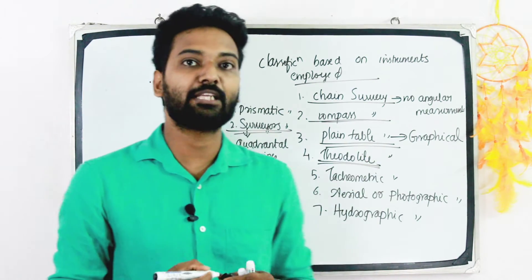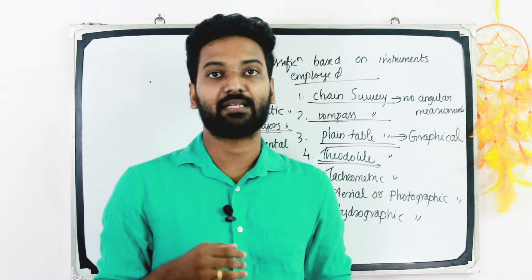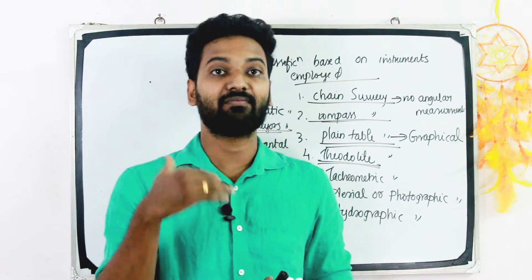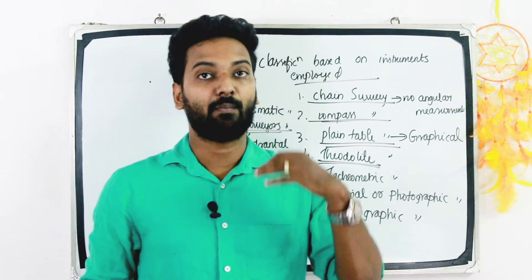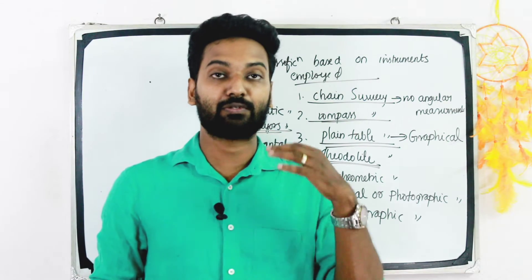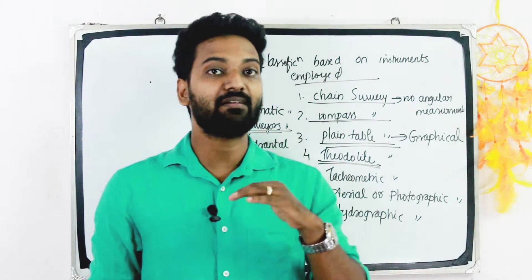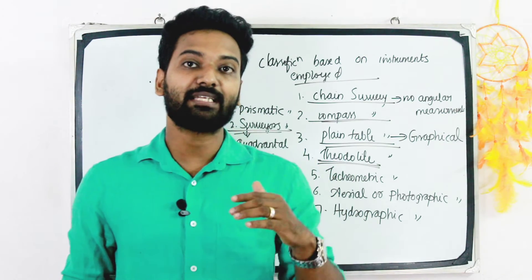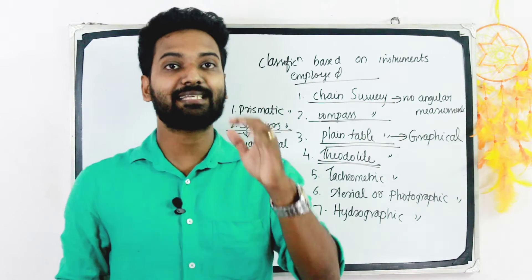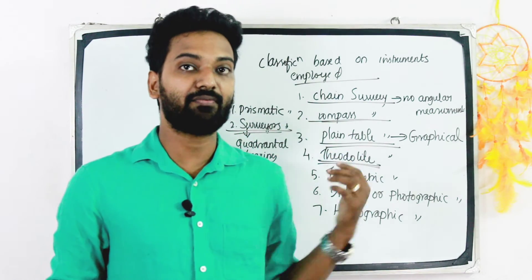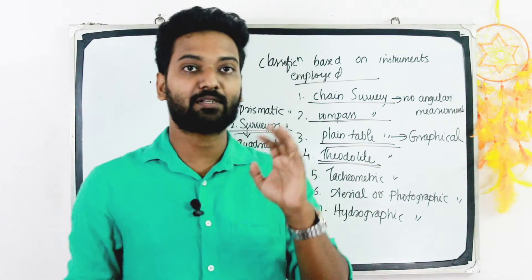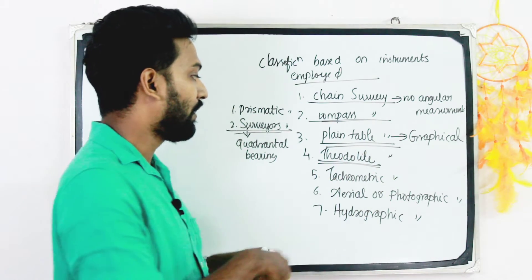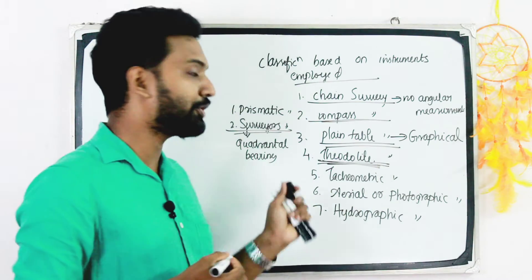The fourth one is theodolite survey. Theodolite is the most intricate and accurate instrument used for measurement of horizontal and vertical angles. The theodolite consists of a telescope by which distant objects can be sighted.